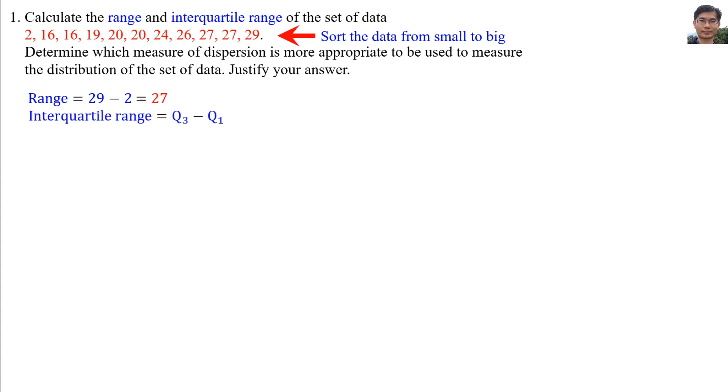The interquartile range is equal to third quartile minus first quartile. We need to find the median first. The median is 20, and so the third quartile is in the middle of the five data, that's 27. Then we find the first quartile. First quartile is before the median, the five data. The middle one is 16.